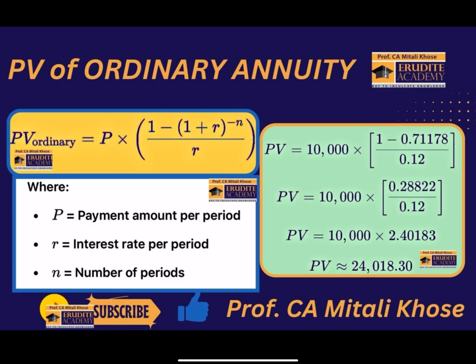When cash flows are constant over a period of time, we can also calculate present value using a shortcut. For that, either the memory function or the GT function can be used. When using memory functions, first type 1 divided by 1.12, press equal to, then press M+. Again, press equal to and M+. Likewise, a third time press equal to and M+. Now press MRC. We can see the combined annuity factor for the entire life of the investment.